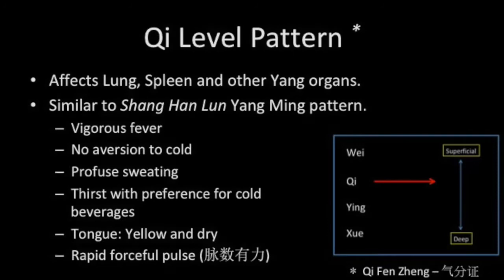When the disease progresses to Qi level, it will spread to affect the spleen and other organs. Qi level disease shows characteristics similar to the Yang Ming pattern found in the Shang Han Lun. There will be vigorous fever with no aversion to cold, accompanied by profuse sweating. As yin has been attacked, there will be considerable thirst with a preference for cold beverages. The tongue will often be yellow and dry and the pulse will be rapid and forceful.